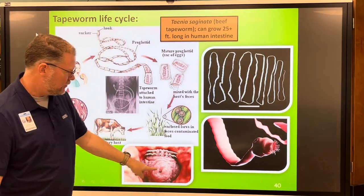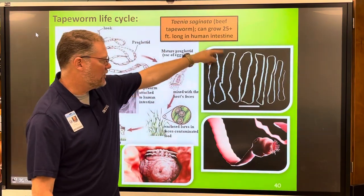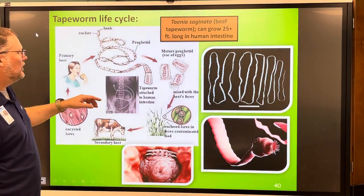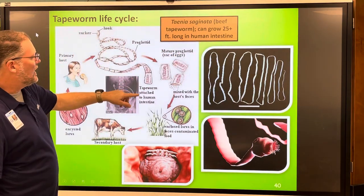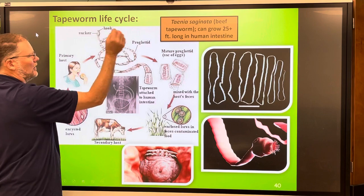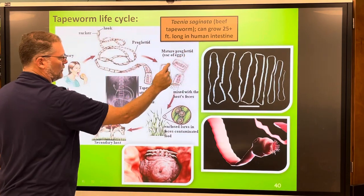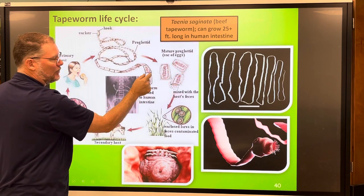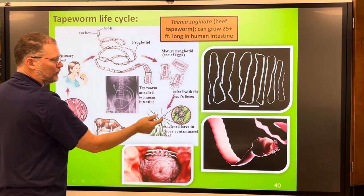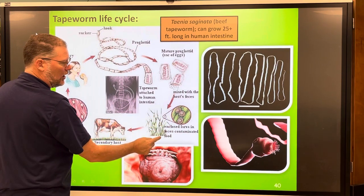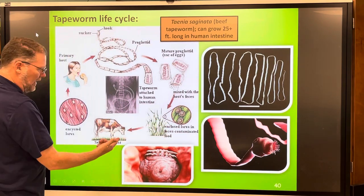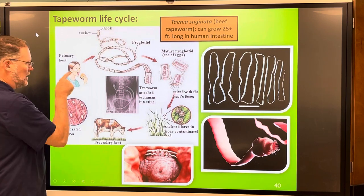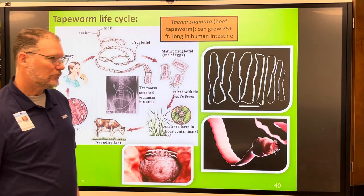The tapeworm lives inside the body. The head has barb-like structures and the worms can be 25 to 30 feet long in the human intestine. As they mature, segments called proglottids — the mature ones are called proglottids — have eggs in them, break off, and come out in the feces. Then the eggs are on the ground, an animal eats grass containing the eggs, larvae get into the meat, you eat the meat, and the process starts over again.